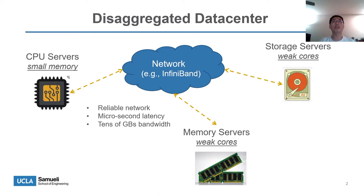First, it's about the background of the disaggregated data center. Recent industry trends suggest a paradigm shift towards disaggregated data centers. Each resource type is built as a standalone blade and connected by the network fabric. As the picture shows, CPU servers, memory servers, and storage servers are connected by InfiniBand. The CPU server has powerful computing resources and a small amount of memory as a local cache. Memory servers are used as a second-tier memory. End-to-end network latency is around tens of microseconds, and network bandwidth can reach up to tens of gigabytes. Hardware resource disaggregation is good for resource utilization, hardware elasticity, and heterogeneity.